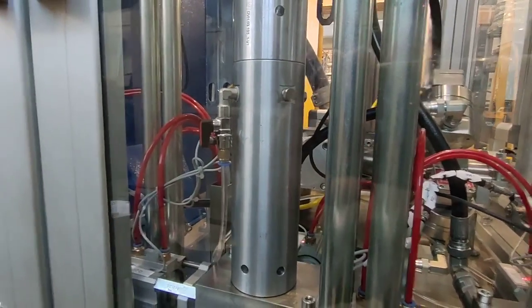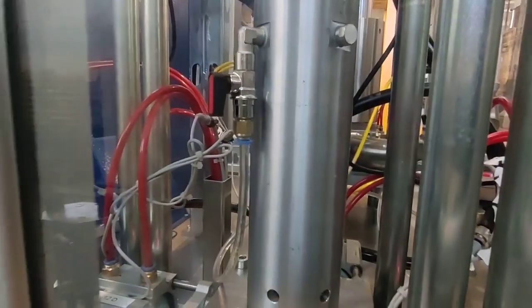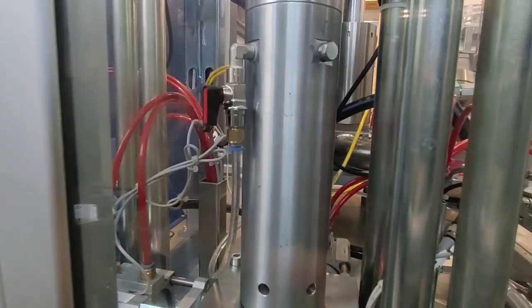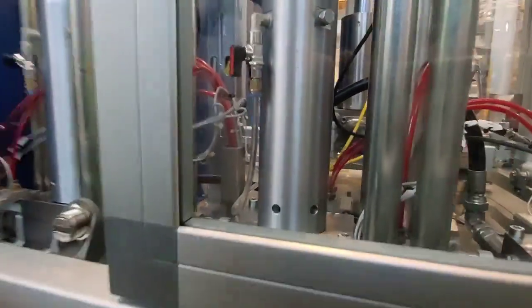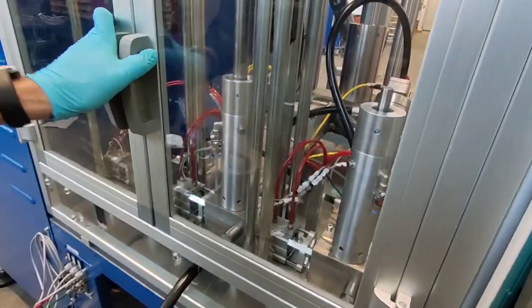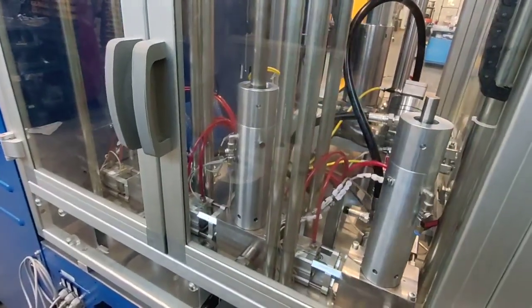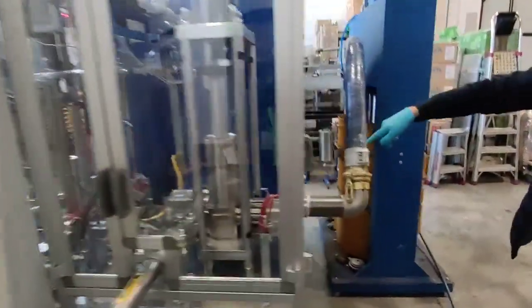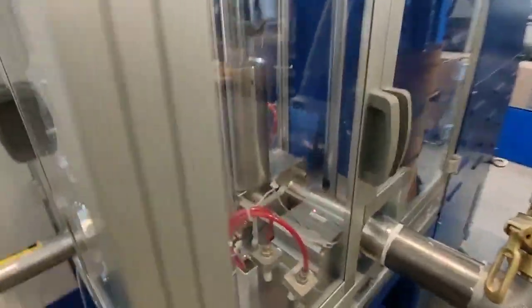The additive is transparent so it's not easy to see, but it's coming out. When we see the product coming out we can close the step. Then we can start also the feeding of the main product from the press in order to supply product to the main dosing unit.